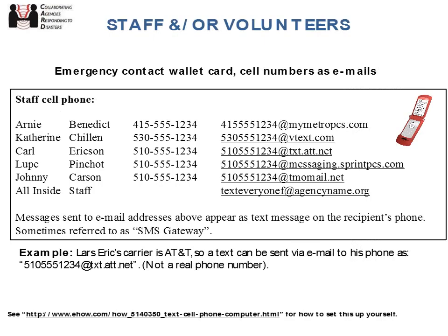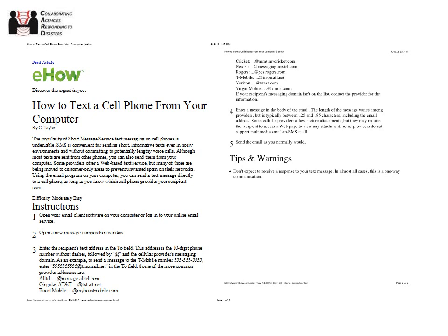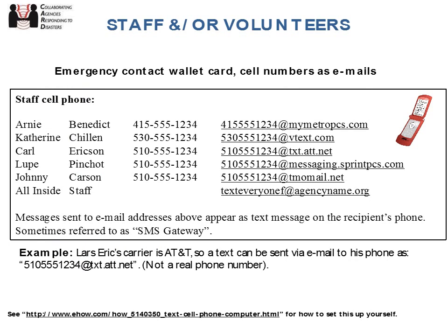Phone trick number two: if you know someone's cell number and their provider — AT&T, Verizon, or Sprint — almost all of these carriers have a special email address format that lets you send email-to-text messages. If I dropped my phone in water but had access to a computer, I could still send texts to people using these special email addresses. From your end it looks like a text; from mine it looks like an email. You can also make group email addresses to text your entire staff at once.